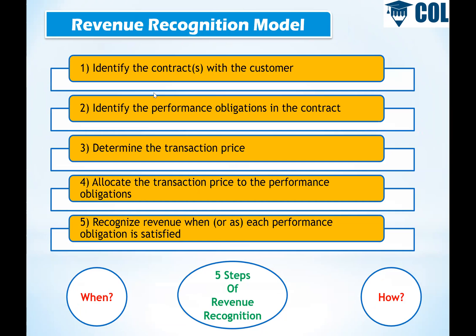The IFRS 15 model is called the Revenue Recognition Model. Step 1 is to identify the contract. A contract with a customer can be written, verbal, or non-verbal, but rules, regulations, and customs must be established. For example, if there is a retail agreement, it automatically goes to the client; if there is an online sale, there is a contract between the seller and the buyer.